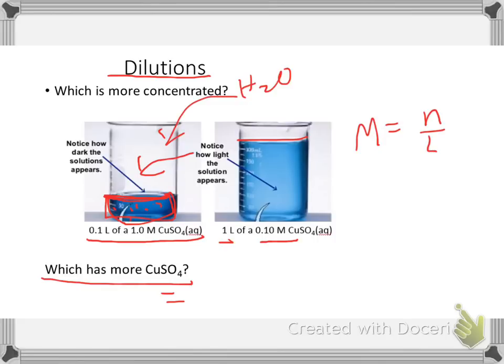So if I rearrange that, I get mols equals molarity times liters. So if I take 0.1 liters times 1 molar, I get 0.1 moles. And if I take 1 liter times 0.1, I get 0.1 moles. So they both have 0.1 moles.